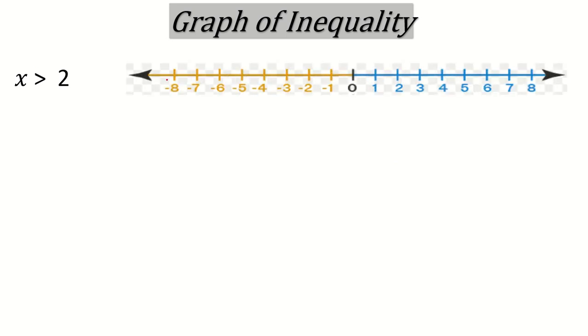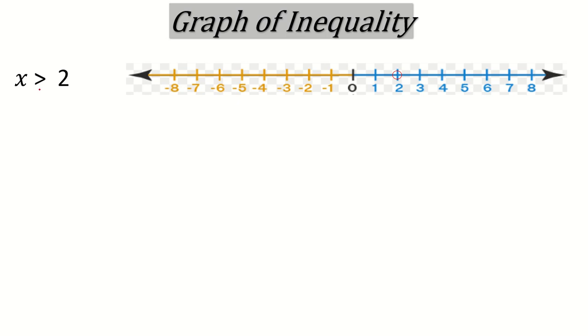Now let's talk about the graph of inequalities. If you have greater than, the line will go to the right-hand side from that number. So where is 2? 2 is here. Simply make a circle only — don't color it. Why will you not color it? Because there is no equal to sign. Just make a blank circle here and then draw a line towards the right.